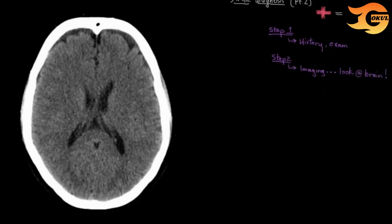What sorts of scans can be done to look at the brain? First up, you'd likely get an immediate CT scan, or computerized tomography scan, which is basically a special type of x-ray that takes lots of images from lots of different levels and angles. The end result is that you get to look at the brain in lots of different views.